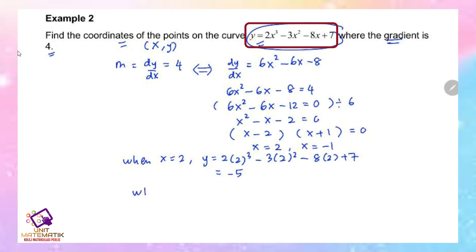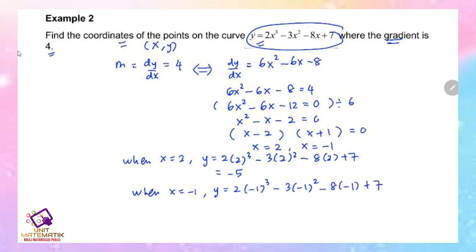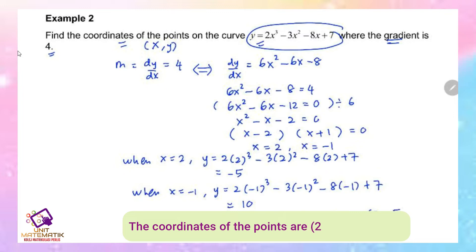When x = -1: y = 2(-1)³ - 3(-1)² - 8(-1) + 7, giving y = 10. So we can conclude that the coordinates of the points are (2, -5) and (-1, 10).